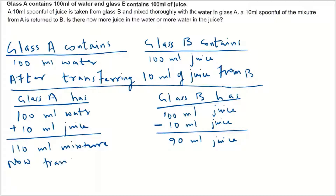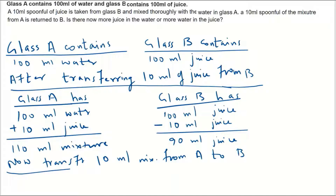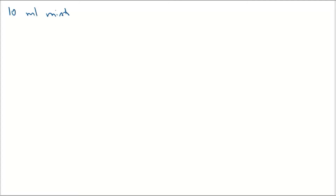Now, as given, we have to transfer 10 ml from A to B. But A contains a mixture, so we need to know in that 10 ml mixture how much is water and how much is juice. We need to calculate the composition of that 10 ml mixture.